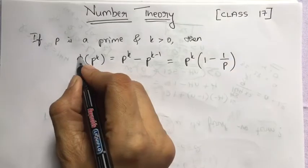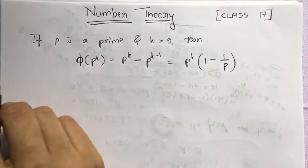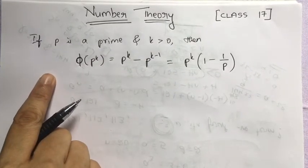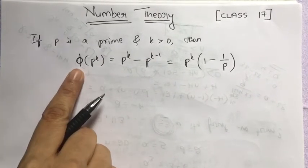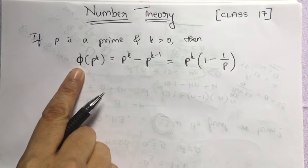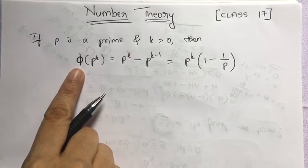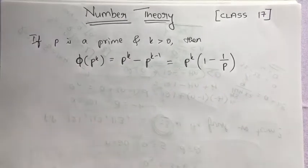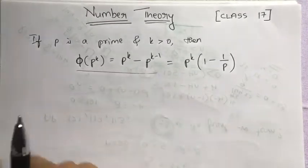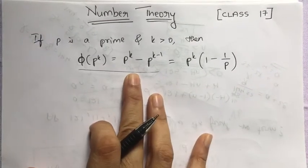This Euler phi function is also called the Euler-Totient function. So this is the formula. Now how will we derive this?